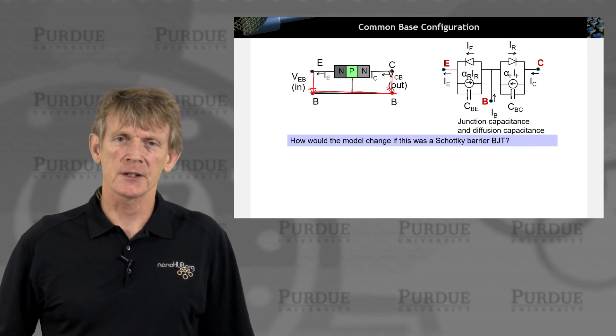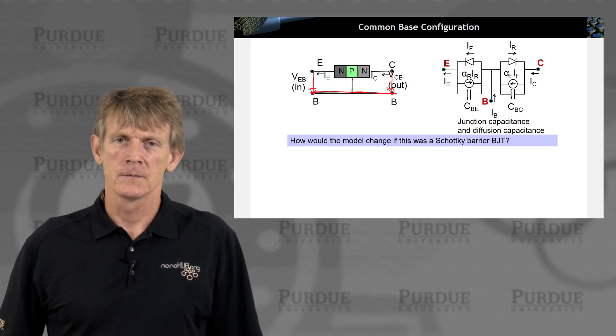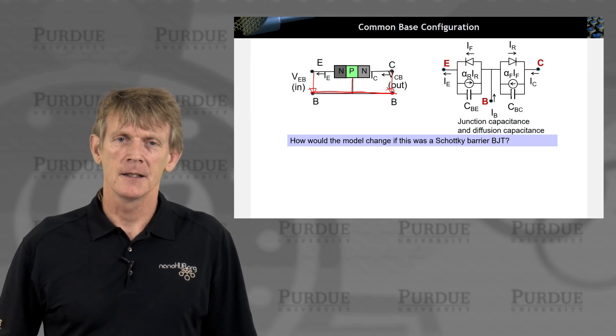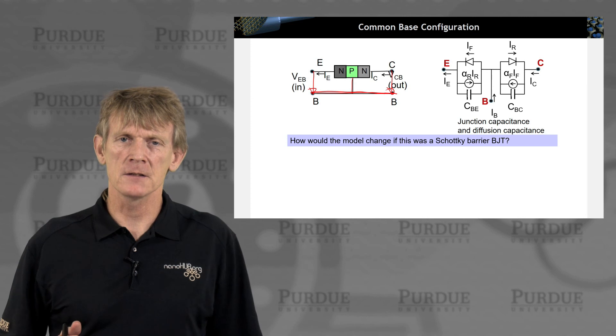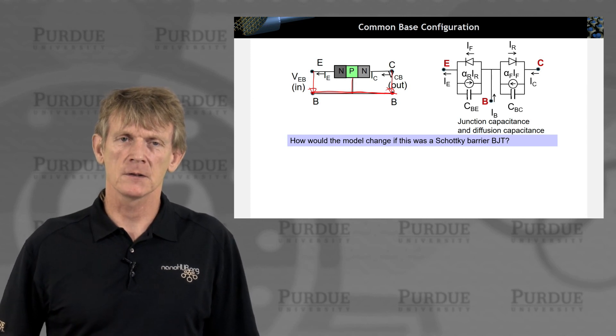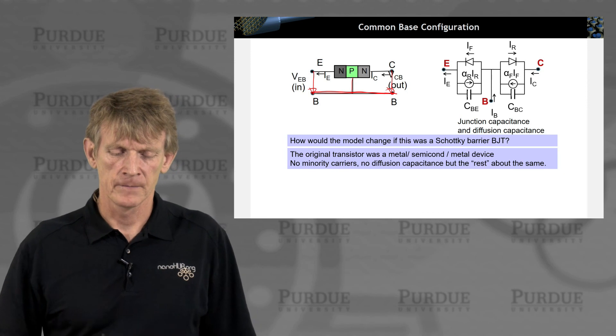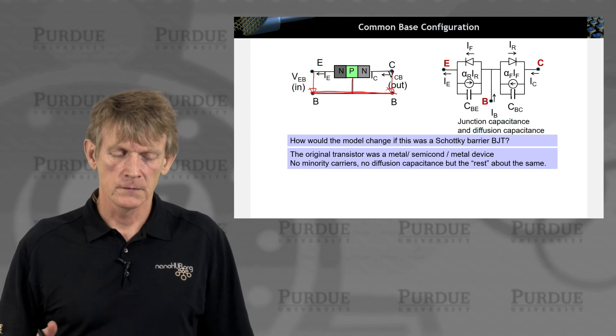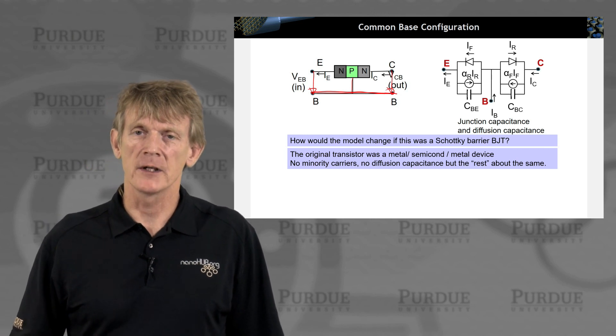My quick intellectual question here: what would change if you had these diodes to be Schottky barriers? Remember, the main difference between a PN junction and a Schottky junction is that it's a majority carrier device. So you wouldn't have these depletion and diffusion coefficients. You don't have diffusion capacitances. But other than that, something similar is possible in Schottky barrier structures. The original transistor was a metal semiconductor metal device, so obviously this can be done. There is no minority carriers, no diffusion capacitance, but the rest is about the same.